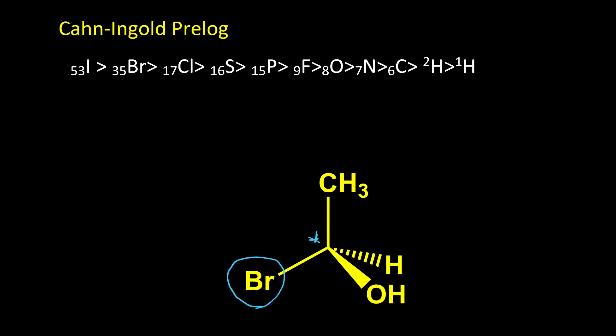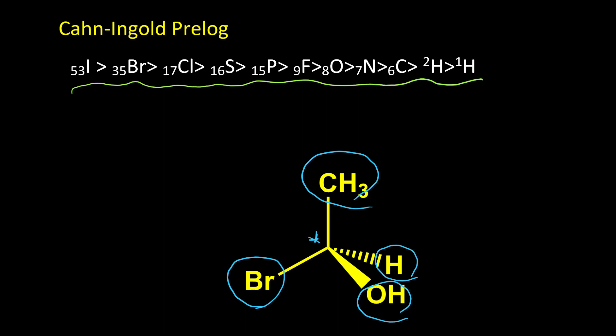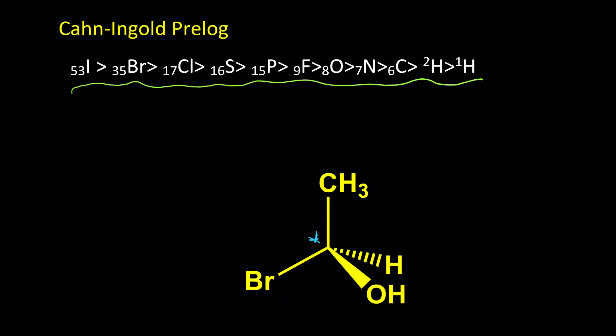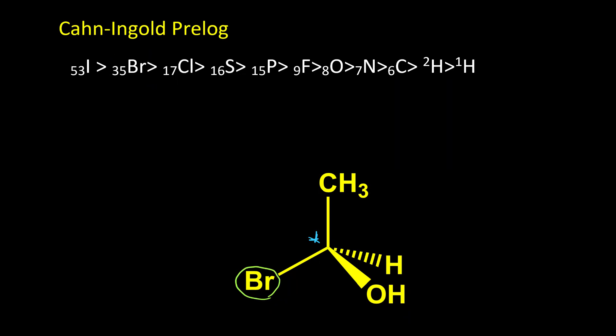So we have Br, CH3, OH, and H. We need to rank them, and our priority is based on atomic mass or atomic number. Here you can see a list of some common elements for organic chemistry and we're going to use it to find the configuration for this chiral center. The first atom — the highest one here — is bromine, as you can see here. So we put number one for bromine.